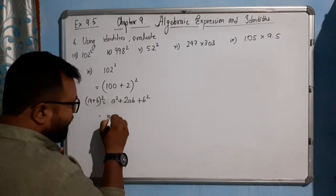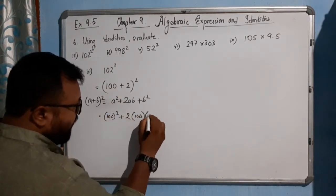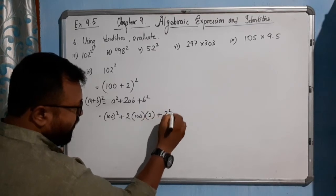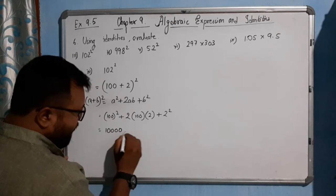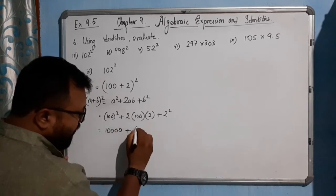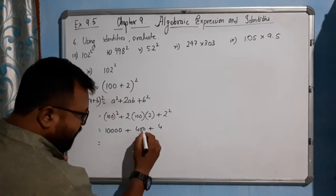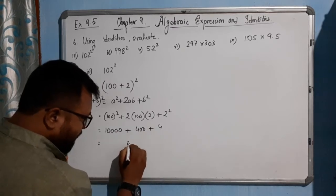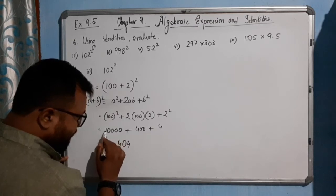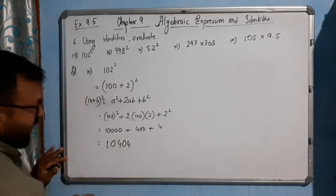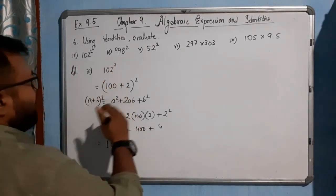So it will be 100 square plus twice 100 into 2 plus 2 square. That's 10,000 plus 400 plus 4, which equals 10,404. This is the answer of question number third.